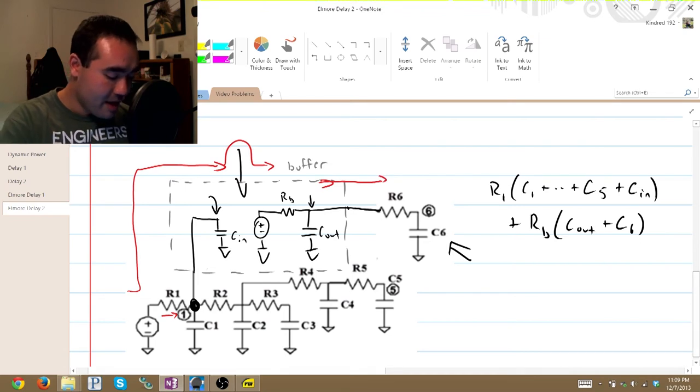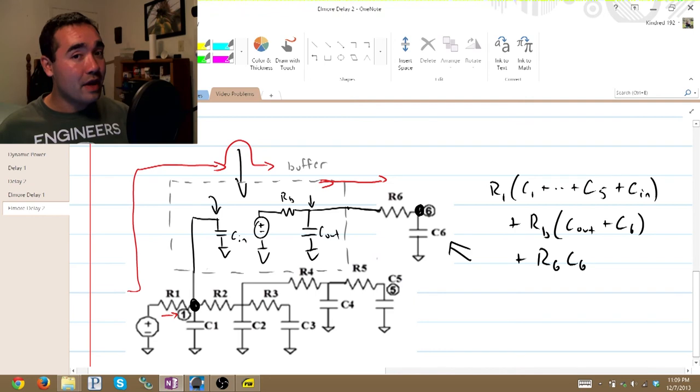We continue down our propagation path. We hit R6 plus R6 times everything downstream from this node, C6.